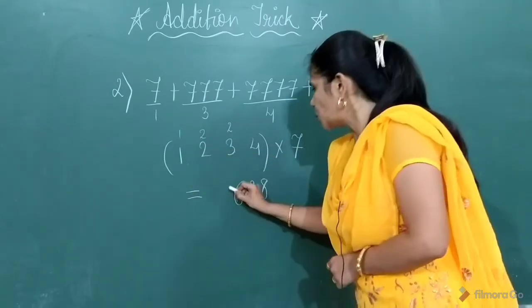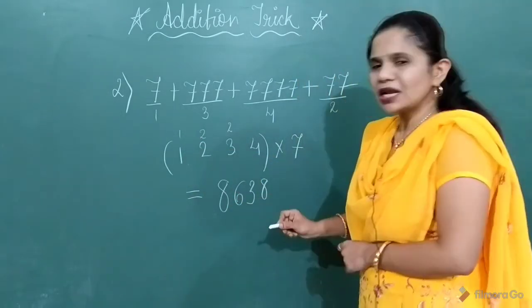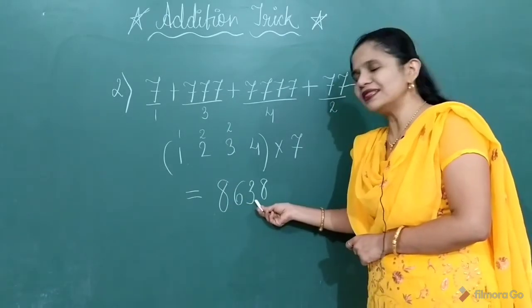7 ones are 7 plus 1, 8. So what answer you will get? 8,638.